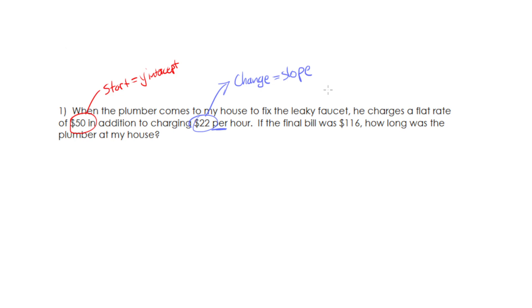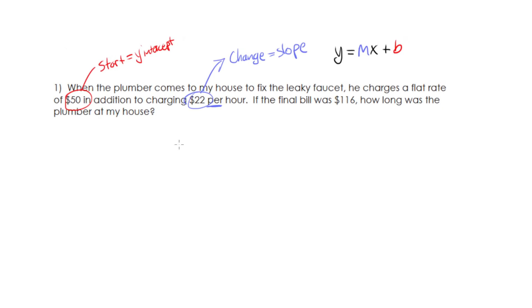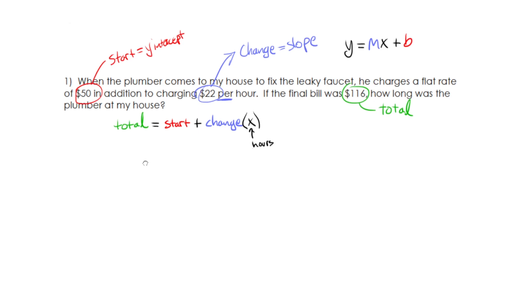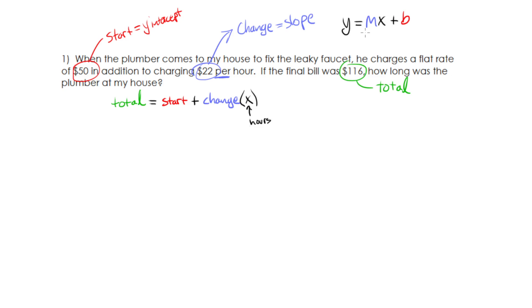So if I wanted to build this into my favorite equation of all times, y equals mx plus b. This would be m is my slope, x, and then my b is the y-intercept. Alright, then this one right here, this is my total. So if I just wanted to build this into an equation, it would be my total equals my starting value plus the amount that gets changed times the number of things that happen.